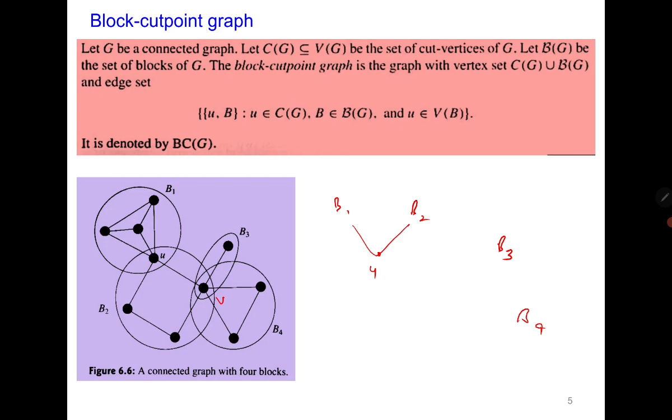Then B2 and B3 are sharing this one as V, and also B4. So this is the required block cut-point graph, very easy to draw.